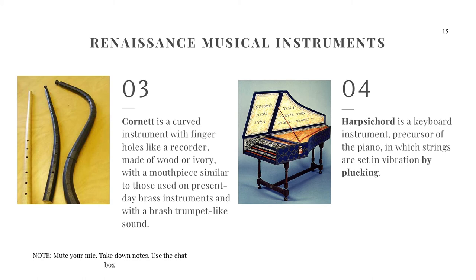Lastly, we have the harpsichord, which is a keyboard instrument and precursor of the piano in which the strings are set in vibration by plucking. It looks similar to a piano, but the difference is that in a piano the strings are struck by a hammer, while in a harpsichord the strings are plucked by hooks — so when you press a key, the hook plucks the string creating a musical sound. Another trivia: the colors of the harpsichord keys are reversed compared to the piano — the black keys of the piano become white on the harpsichord and vice versa.